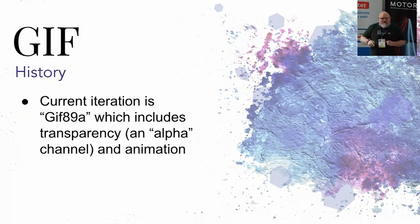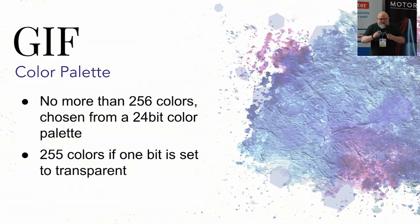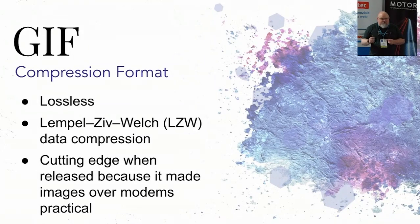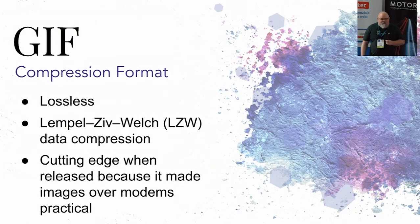You could have a little jet plane shoot across your screen — it was great. GIF cannot have more than 256 colors chosen from a 24-bit color palette; if one is transparent you only get 255. In the early days I would bring up a grid with 256 colors and pick which ones I didn't need one at a time — very tedious. The compression format is lossless, so you don't lose quality as the image gets smaller. LZW (Lempel–Ziv–Welch) created this compression format for CompuServe, and it was revolutionary because it was the first time you could reasonably get images over a modem.